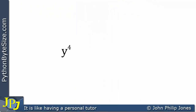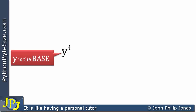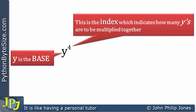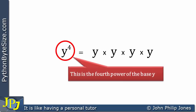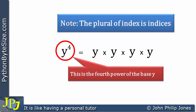Let's consider y to the power 4. When you look at that, you need to get used to the terminology associated with powers or indices. We have y being the base, and 4 being the index, which tells us how many y's we're going to have that we need to multiply together. This is the fourth power of the base y. If we're going to look at numbers that have lots of values raised to powers, we need to consider the fact that the plural of the index is indices.